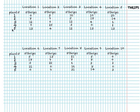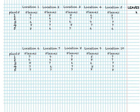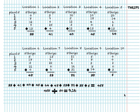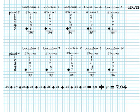When scouting for onion thrips, count thrips on 5 plants at 10 different locations distributed throughout a field. In your notebook, record both the number of thrips and the number of leaves that you count on each plant. When you are done counting, add up the thrips numbers and divide by 50 to calculate the average number of thrips per plant. Do the same for leaf numbers — divide the total number of leaves by the number of plants you checked, in this case 50.